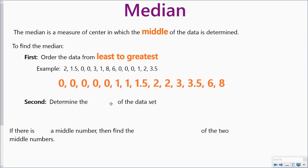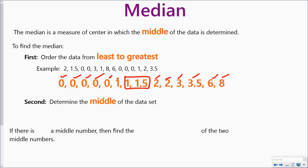The second thing I'm going to do is determine the middle of that data set, and I can do that one of two ways. I can either cross off on each side, working inward, but then I'm left with two numbers in the middle. Or I can take a look and say that there are 14 numbers here, and since the median is the middle, I divide 14 by 2 and that gives me 7. So I would count in 7 numbers from each direction and I still get those two middle numbers.